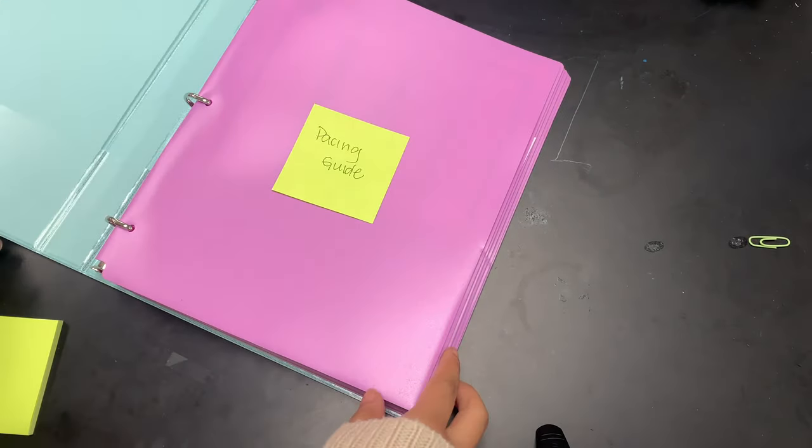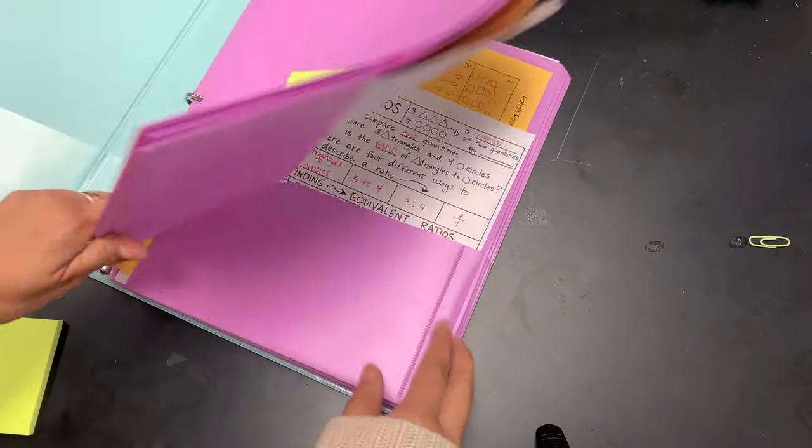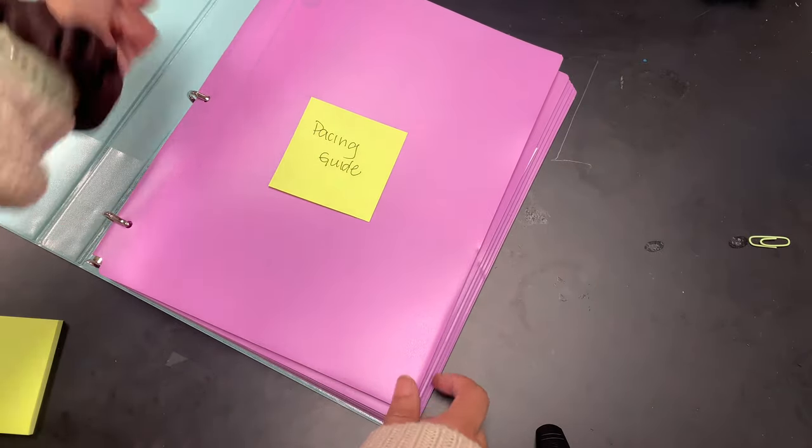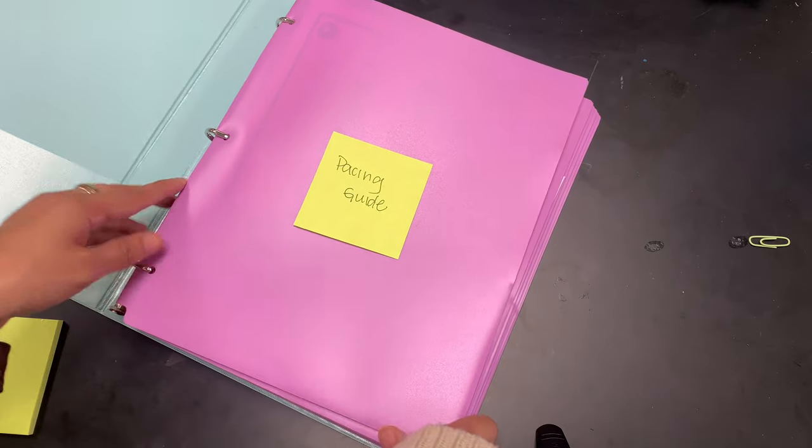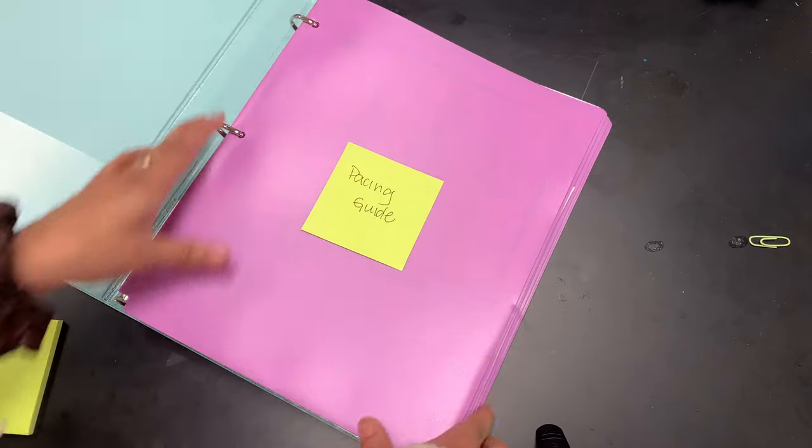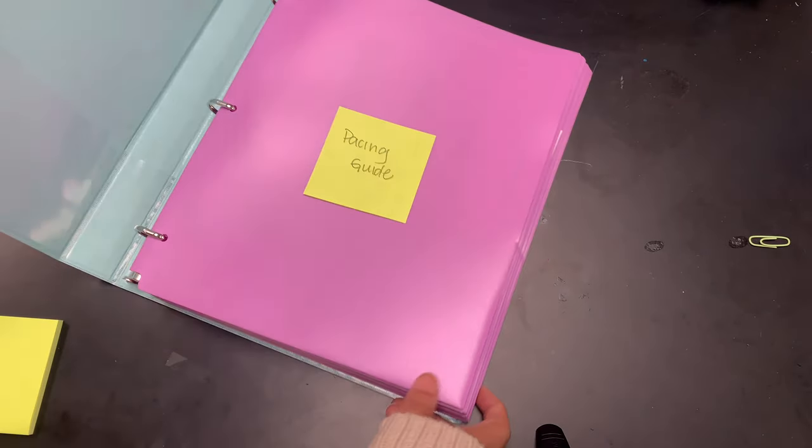So now that all of the folders are in here, I can easily just flip through, find the folder that I want, and then just pull the whole thing out rather than having to pull individual sheets out. So I really like this method, and yeah, that's how I make a unit binder.